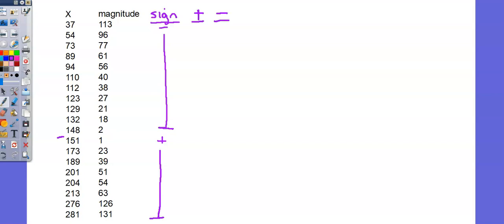Looking for the smallest magnitude, I see that's 1, relating to the measurement of 151. The sign is positive, so my rank number 1, the smallest magnitude, goes into the positive column. Scanning, I see my next magnitude getting larger is 2, right above. That's tied to the measurement of 148, which has a sign negative, so I'm going to put the ranking number 2 in the negative column. Next is 18, right above the 148, so measurement 132 has a magnitude of 18. That's my third rank, assigned to a sign negative, so I'll put number 3 in the negative column.